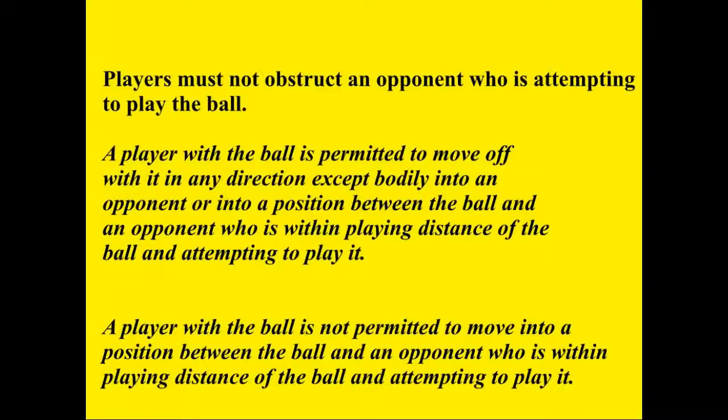A player with the ball is permitted to move off with it in any direction except bodily into an opponent — an action we've covered several times. The next part is the last amendment made to the obstruction rule: 'or into a position between the ball and an opponent who is within playing distance of the ball and attempting to play it.' This last part is intended to address instances where players move with the ball without moving bodily into the opponent, but at the same time move to maintain an obstruction position — for example, a player who shunts sideways along a line while maintaining the ball in a shielded position.